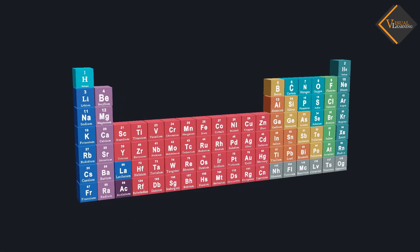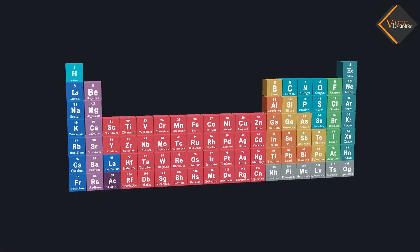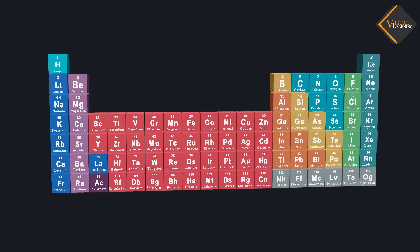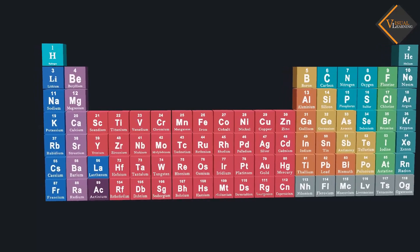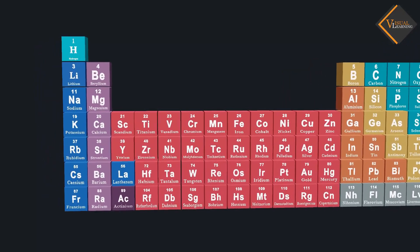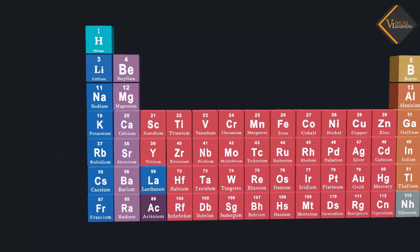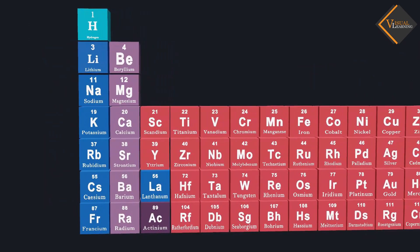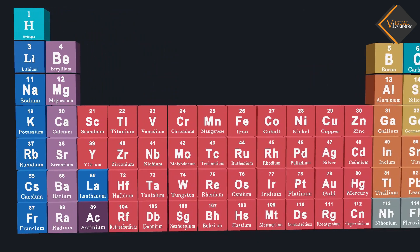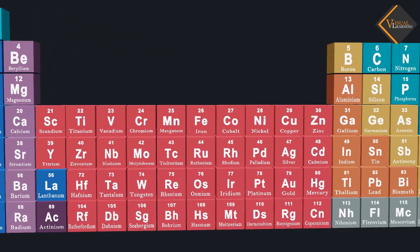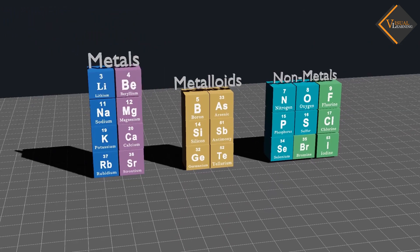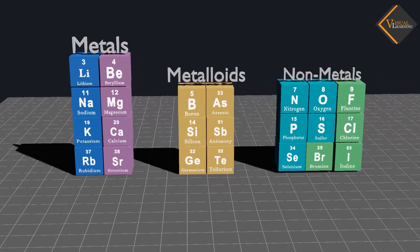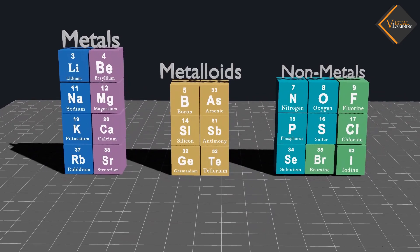As different elements were being discovered, scientists gathered more and more information about the properties of these elements. They found it difficult to organize all that was known about the elements. They started looking for some pattern in their properties on the basis of which they could study such a large number of elements with ease. The earliest attempt to classify the elements resulted in grouping the known elements as metals and non-metals.